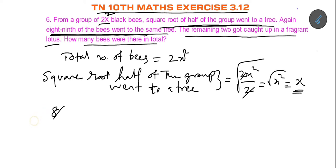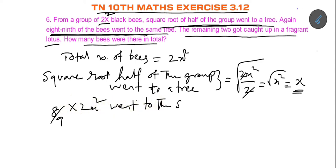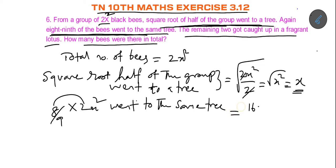Square root of half of the group went to the same tree. Then 8 ninths of the bees: 8 into 2 is 16, so that number is 16x²/9. That is how many went to the same tree.